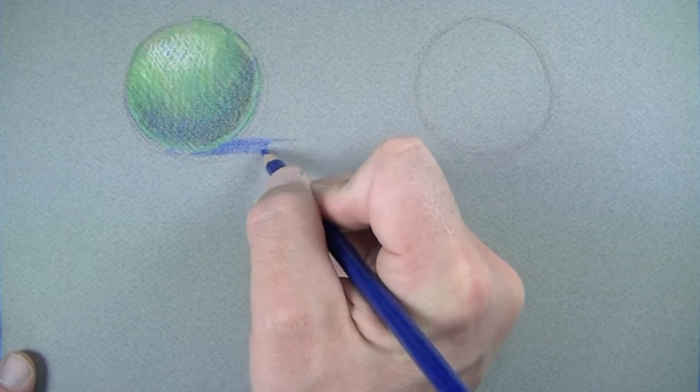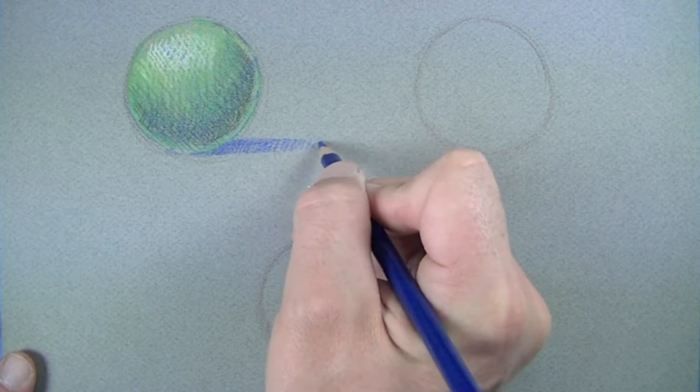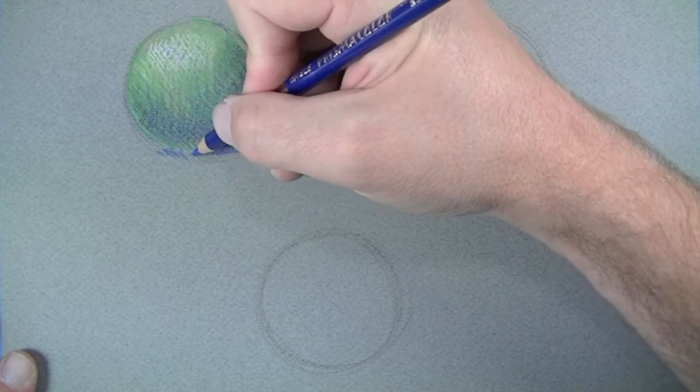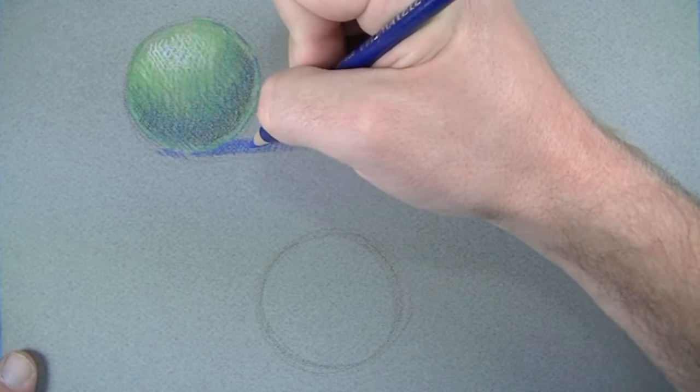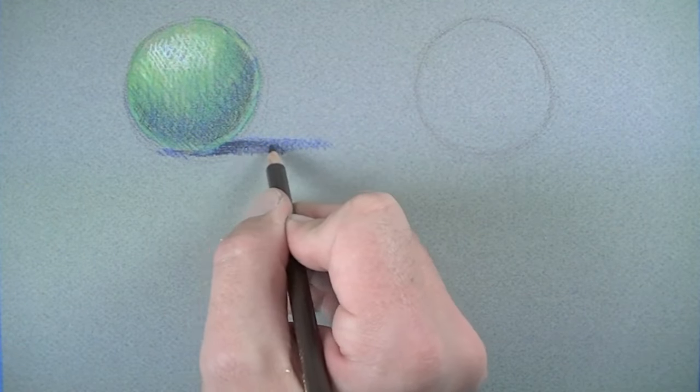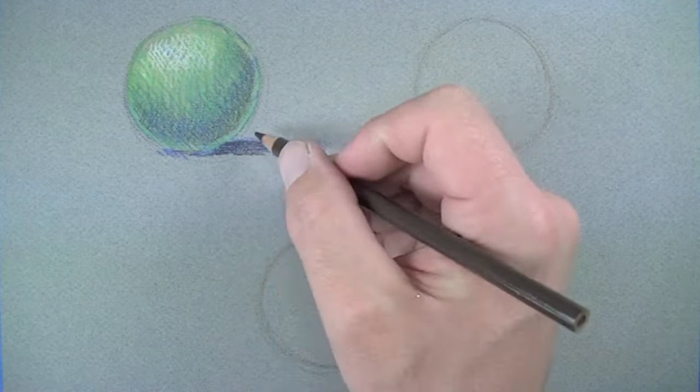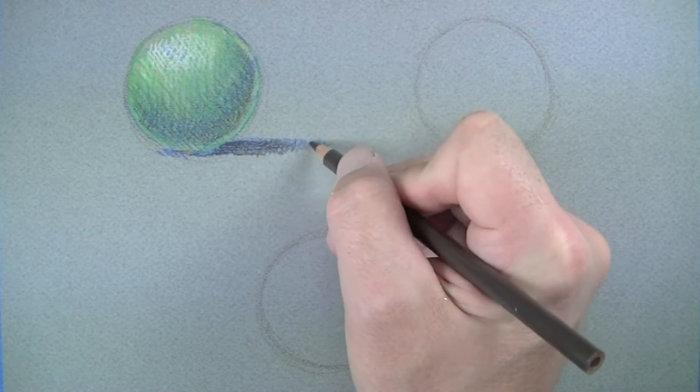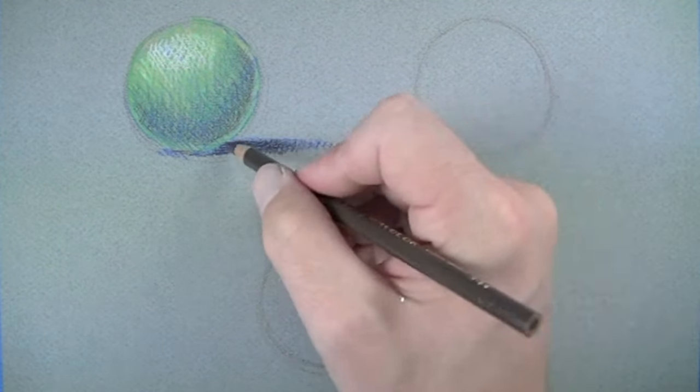We'll also need to establish a cast shadow. In this case we'll start with blue, and then we'll layer over it with dark brown. Doing this creates a more natural looking shadow, as opposed to using a color like black.